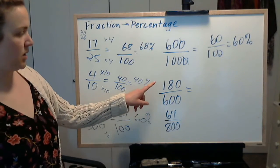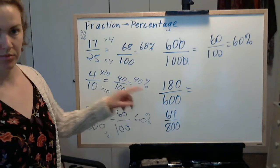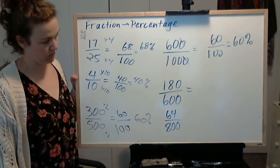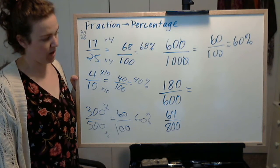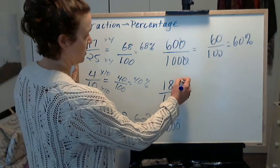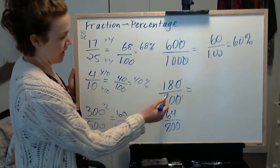How would you tackle this one? 180 out of 600. I think I would once again divide the top and bottom by 10, so that gives me 18 out of 60.